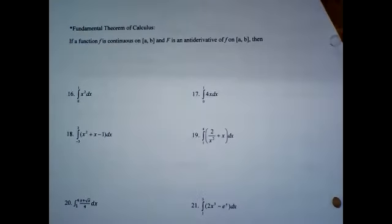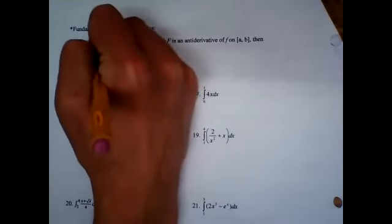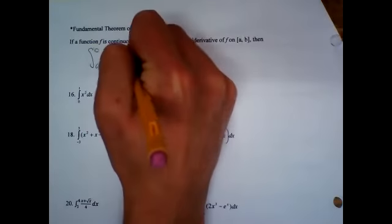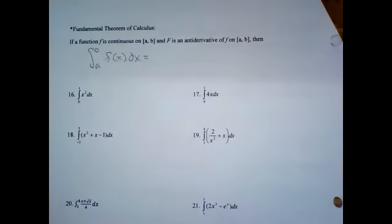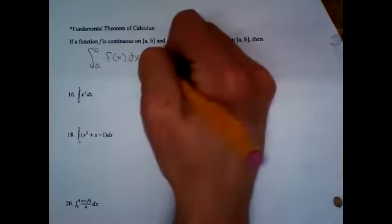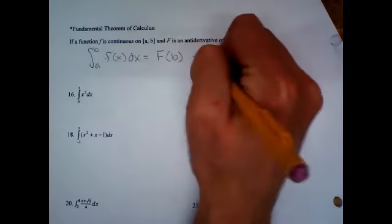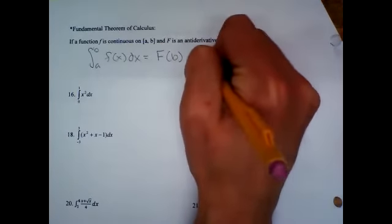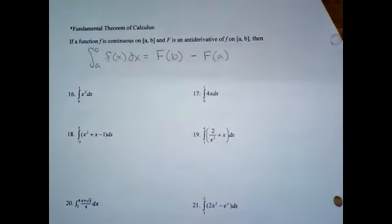So if a function is continuous on interval A to B, and then we do this thing with the capital letter F being the antiderivative, what this says is: if you have the integral from A to B of lowercase f of x dx, you do the antiderivative — so it's capital F — and you evaluate upper boundary minus lower boundary. That allows you to find the area under the curve from A to B.